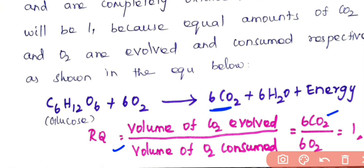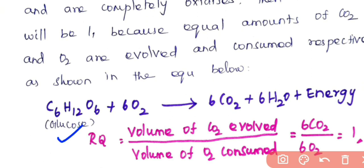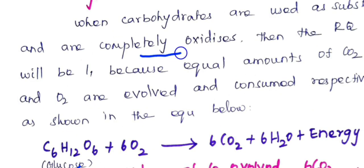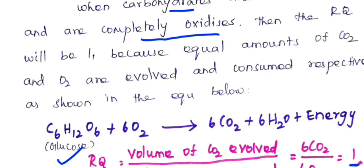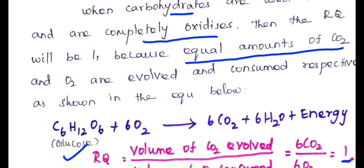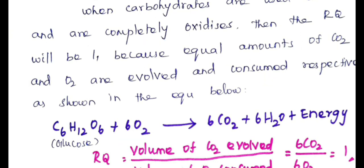So, 6 CO₂ divided by the volume of oxygen consumed, which is 6 O₂. RQ equals 6 divided by 6, which equals 1. From this RQ value we conclude that if RQ equals 1, there is complete oxidation of the substrate — here it is carbohydrate — because equal amounts of carbon dioxide are evolved and oxygen is consumed during the reaction. This means there is complete oxidation of the respiratory substrate.